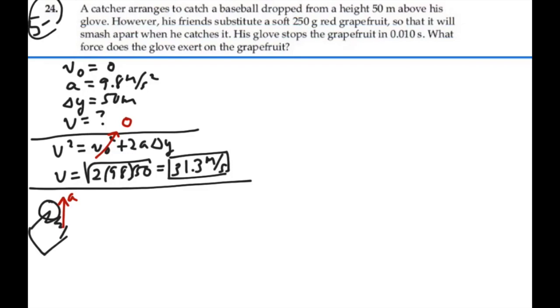Acceleration being against that motion. Initial velocity is 31.3 for this situation. Our final velocity would be zero. Acceleration is what we want to find, and the time of contact is 0.01 seconds.